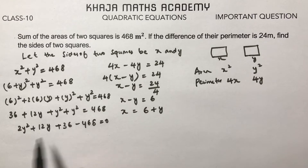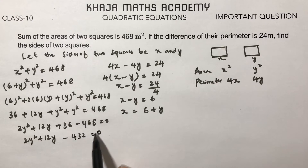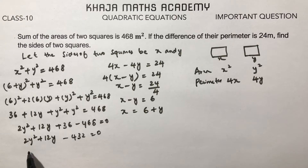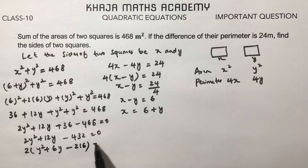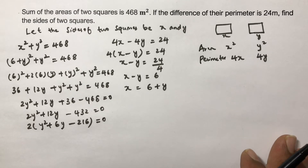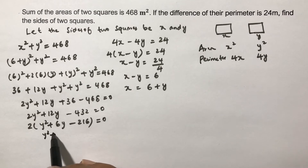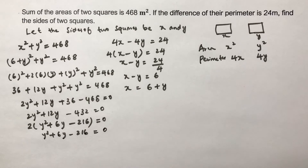Simplifying: 2y² + 12y + 36 = 468, so 2y² + 12y − 432 = 0. Taking 2 common from all three terms gives y² + 6y − 216 = 0.